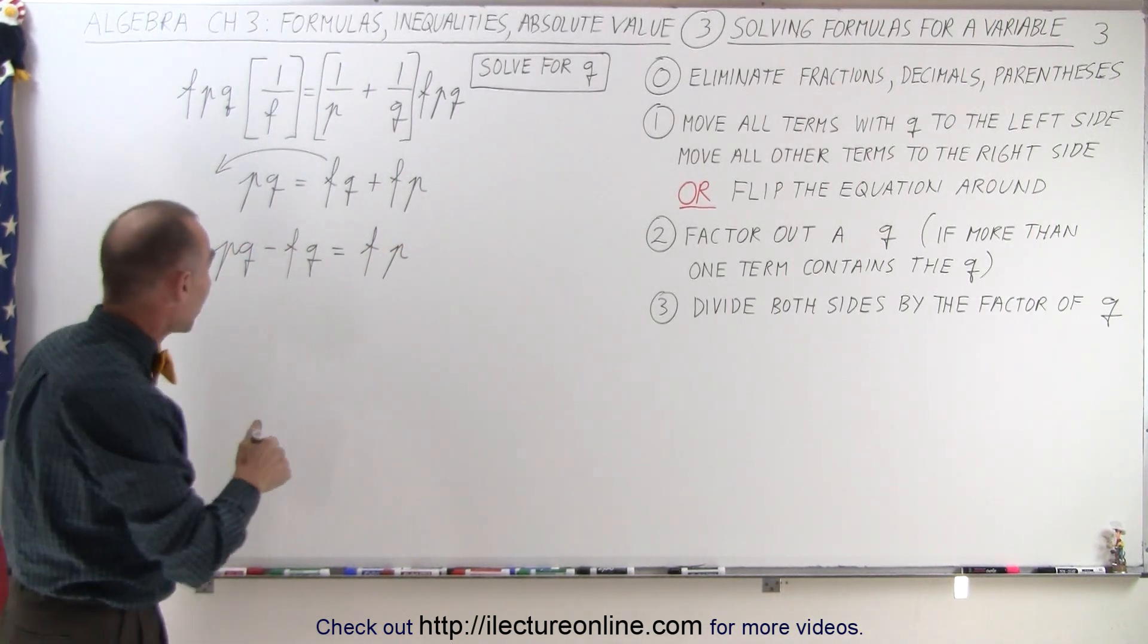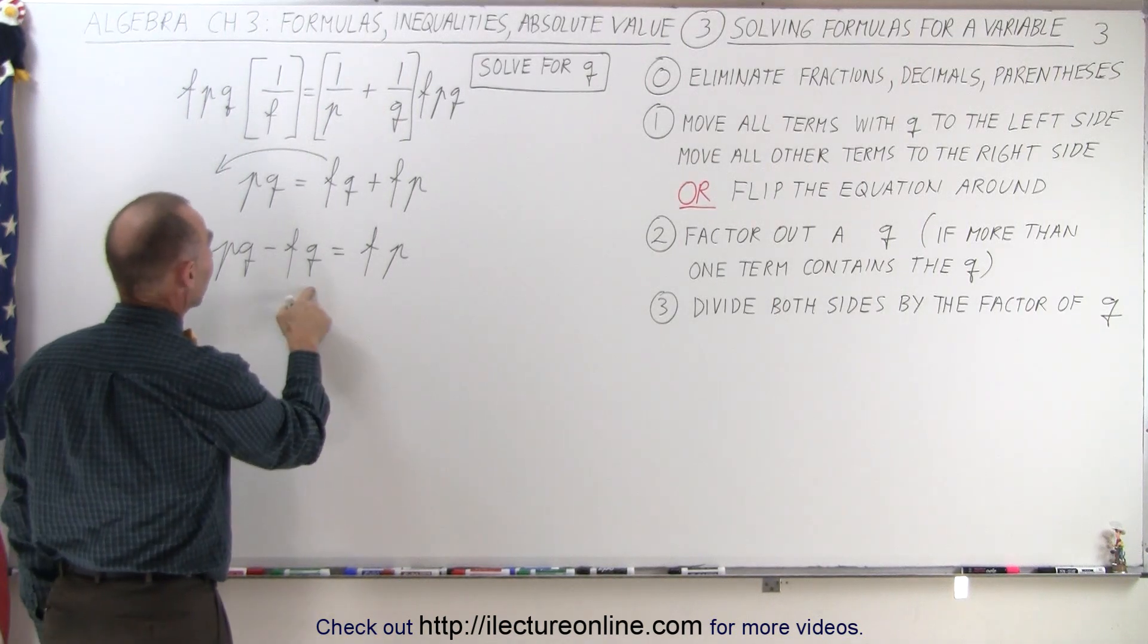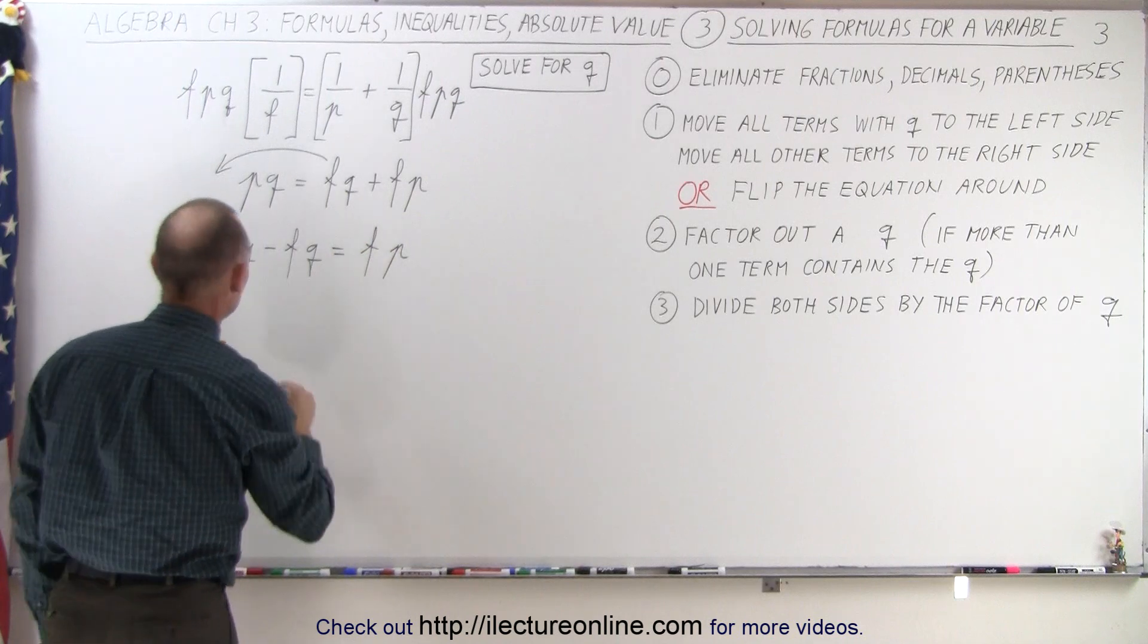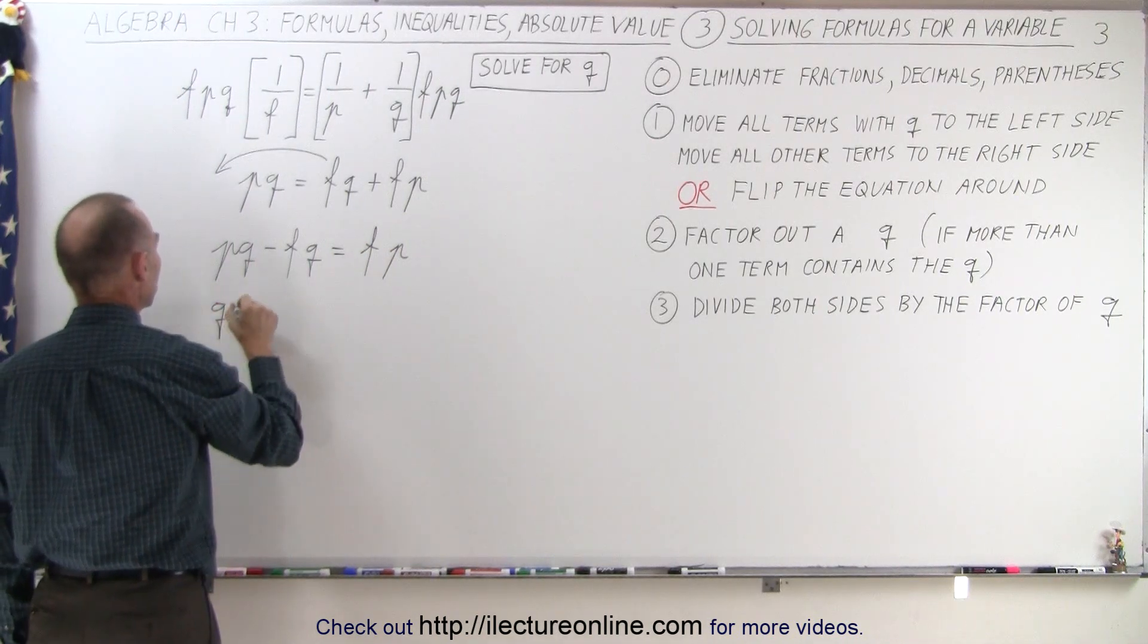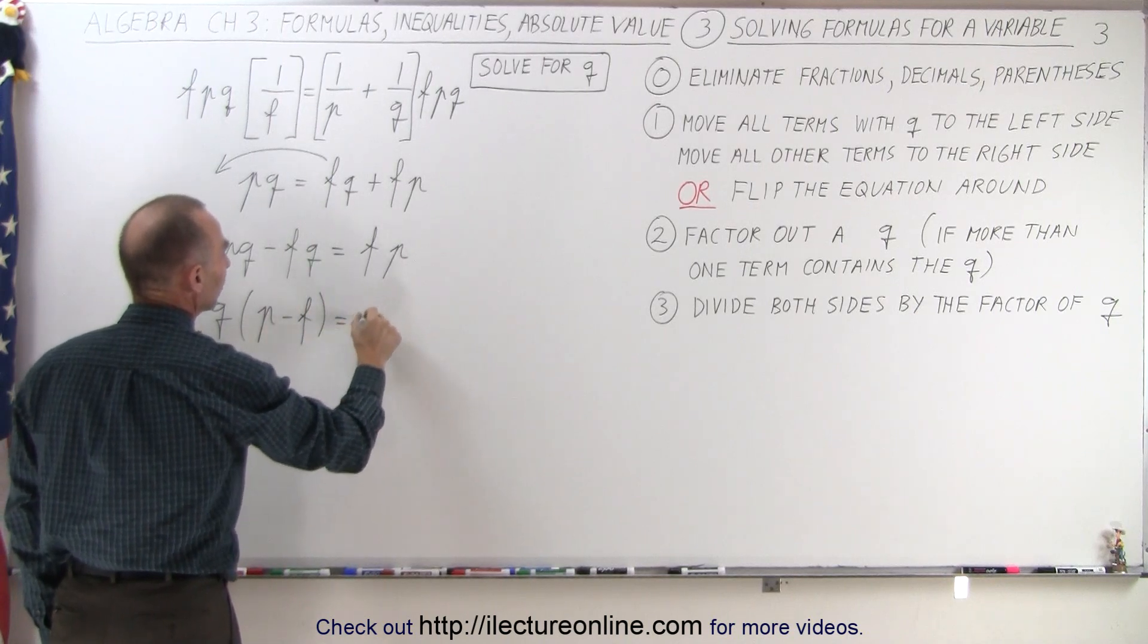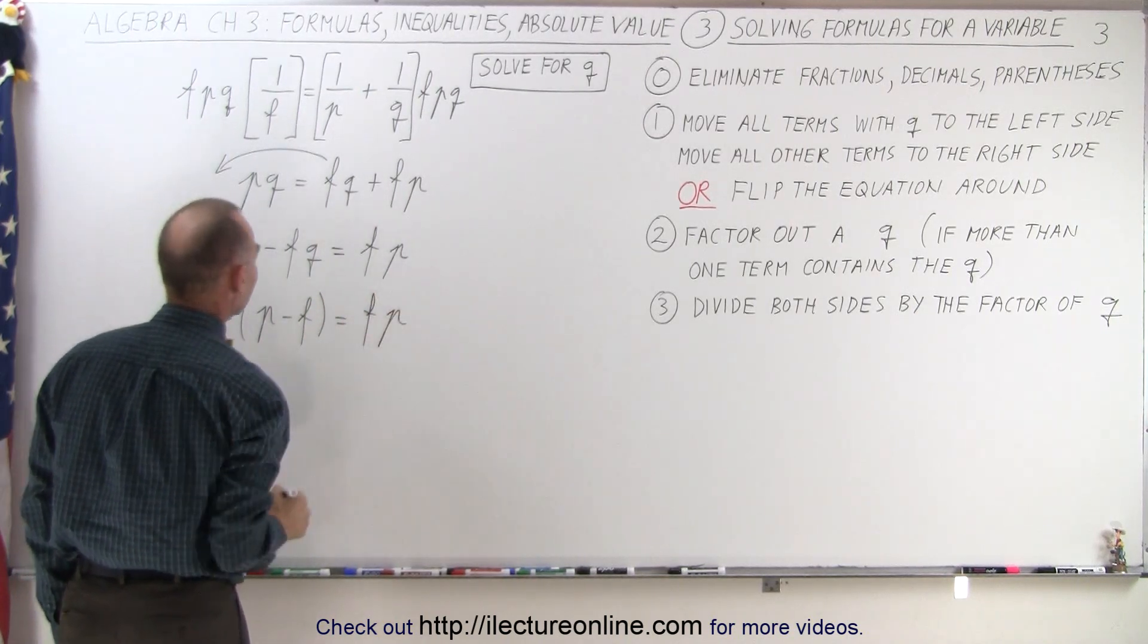The next step is we're going to factor out a Q on the left side, because that's what they tell us to do. If there's more than one term, factor out a Q. So we end up with Q times P minus F is equal to F times P on the right side.